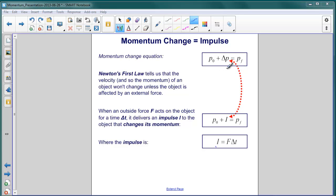Where does this change in momentum come from? Well, Newton's first law tells us that the velocity, and as we now know the momentum of an object, won't change unless the object is affected by a non-zero external force. So this change in momentum is mediated by a force.